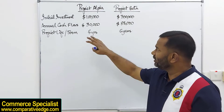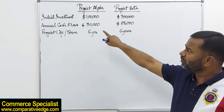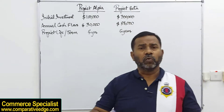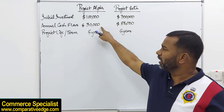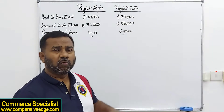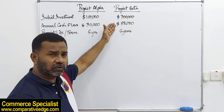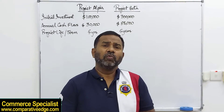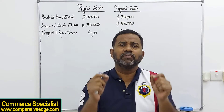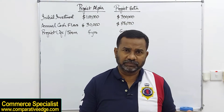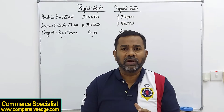For explaining crossover rates I have given a scenario here. There are two projects: project Alpha and project Beta. Both projects have different initial investment requirements. For project Alpha you invest 100,000 upfront and receive annual cash flows of 30,000 dollars for 5 years. For project Beta the initial investment is 300,000, giving annual cash flows of 88,000 for 5 years. We need to find the crossover rate — the discount rate at which both projects give the same NPV.